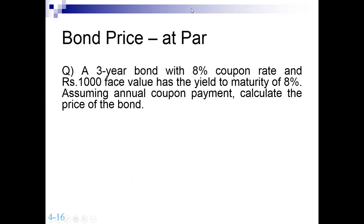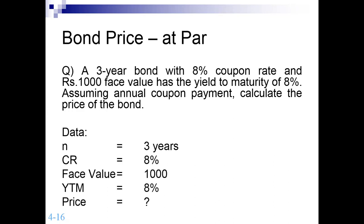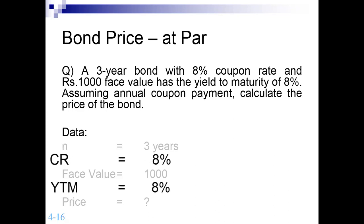The third condition is interesting but very easy to understand — some students can even solve it verbally without numerical support. Consider a three-year bond with a coupon rate of 8%, face value 1,000, and a yield to maturity of 8%. The company is offering 8% while YTM also shows 8% — both are the same rate, meaning the investor demands 8% and the company offers the same rate. The key highlight in this data is that coupon rate and YTM are both equal. Understanding these two concepts helps you grasp the mechanism behind bond pricing.